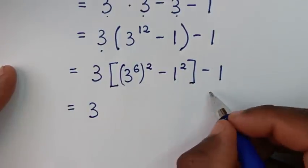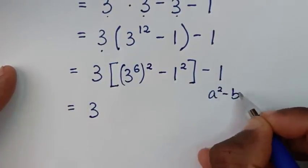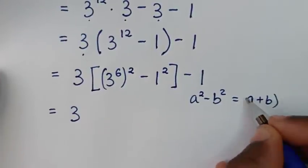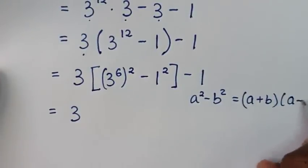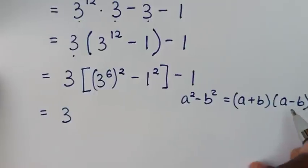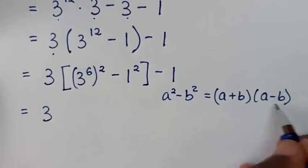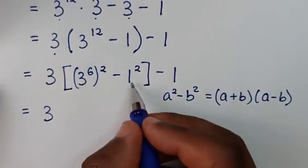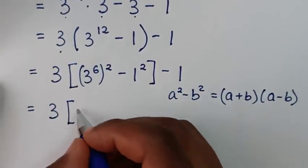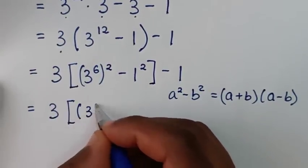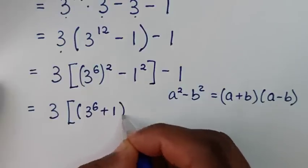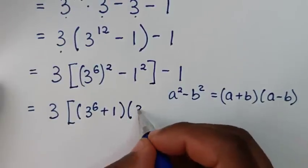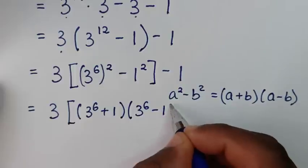Then in the next step it will be equal to 3. From here, inside the bracket it is now in the form of a perfect square, so we will apply the perfect square rule: a squared minus b squared equals (a plus b)(a minus b). Applying this form: (a plus b) gives us (3 power of 6 plus 1), times (a minus b) which gives us (3 power of 6 minus 1).